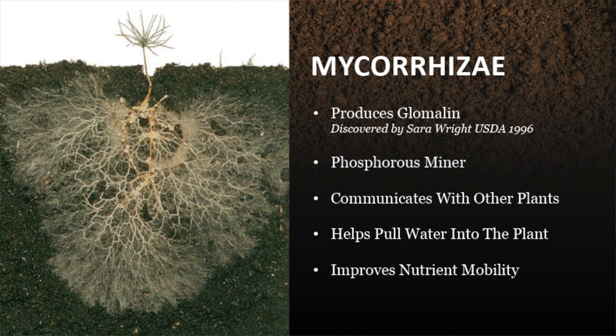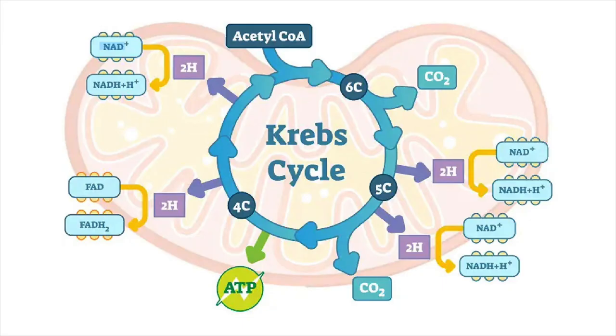And this is where the rubber meets the road, because the mycorrhizal is responsible ultimately for getting the mineral component of energy — which is phosphorus — up into the top of the plant so that the plant can then get involved with what's known as the Krebs energy cycle using that molecule called ATP, adenotriphosphate. So phosphorus is part of the molecule called ATP.